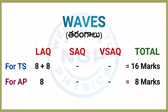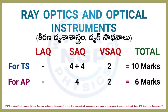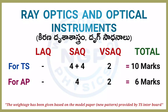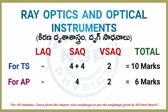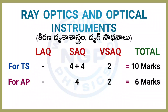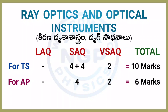Next, second chapter: Ray Optics and Optical Instruments. For TS students, 2 four-marks questions — 4 plus 4 — and one VSAQ of 2 marks. Total chapter weightage is 10 marks. For AP students, one SAQ of 4 marks and one VSAQ of 2 marks.